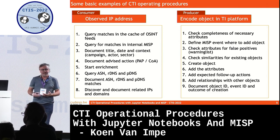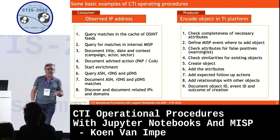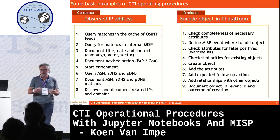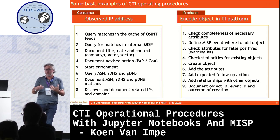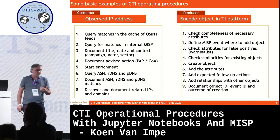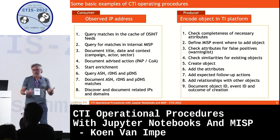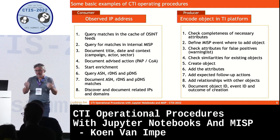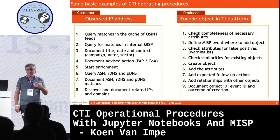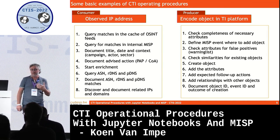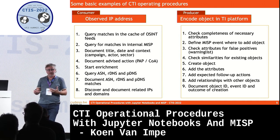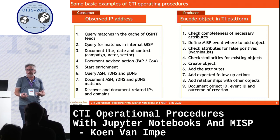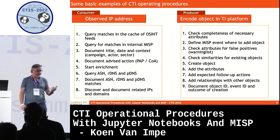Here are some simple examples of CTI operational procedures — one from a consumer point of view, another as a producer. As a consumer, imagine an IP address popped up during an incident response investigation. The steps you give an analyst would be: look up matches in OSINT feeds and your internal MISP instance, document those matches and expected actions, then do enrichment — look up the ASN, passive DNS records, recursive and reverse DNS. Document all matches, which can yield additional IPs or domains to investigate.